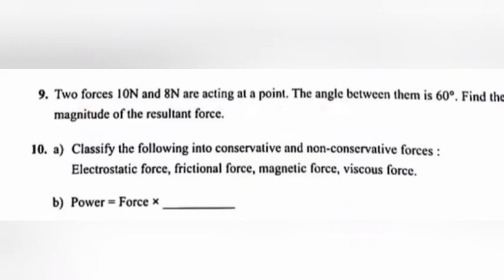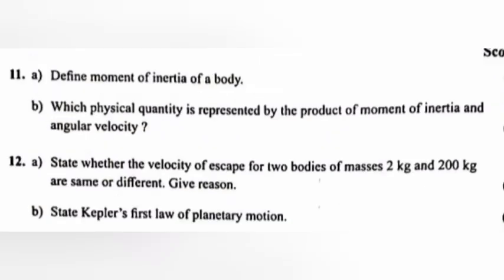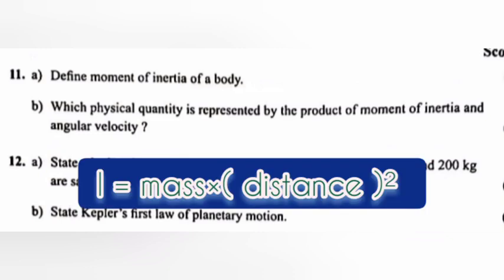Question 11a: Define moment of inertia of a body. Question 11b: Which physical quantity is represented by the product of moment of inertia and angular velocity? Answer: A is equal to mass into distance squared or write the definition. B, angular momentum L equals Iω.